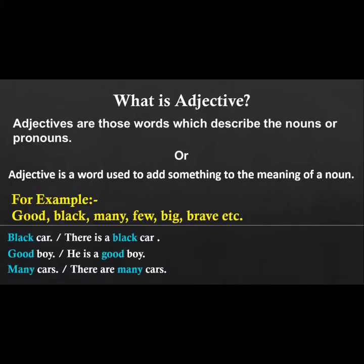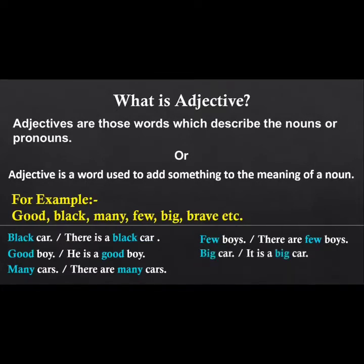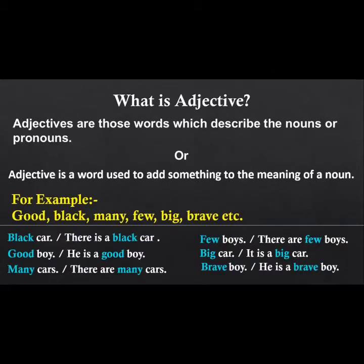The word 'many' is an adjective — 'There are many cars.' The word 'few' is an adjective — 'There are few boys.' The word 'big' is an adjective — 'It is a big car.' The word 'brave' is an adjective that tells us what kind of boy he is — 'He is a brave boy.'